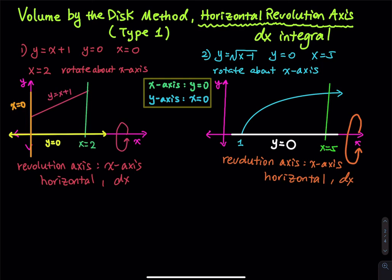Let's start the first problem. The given functions are: y equals x plus 1, y equals 0, x equals 0, and x equals 2. When you do this type of problem, usually the graph is not provided, especially on an in-class written test. Y equals x plus 1 is a straight line, which is usually easy to sketch.